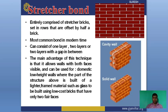Next, if we look more deeply at stretcher bond: stretcher bond entirely comprises stretcher bricks set in a row that are offset by half a brick. It is the most common bond in modern times and can consist of one layer, two layers, or two layers with a gap in between. The main advantage of this technique is that it allows walls with both faces visible, and can be used for domestic low-height walls.